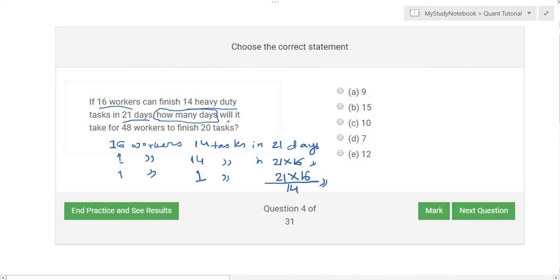Now let us look into the final question: how many days will it take for 48 workers to finish 20 tasks? Let us move on to 48 workers. Since the number of workers is being increased from 1 to 48,